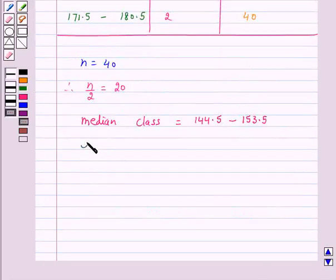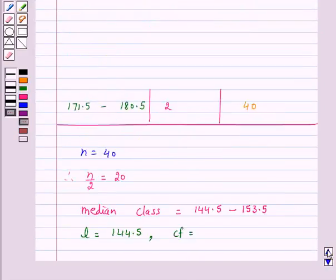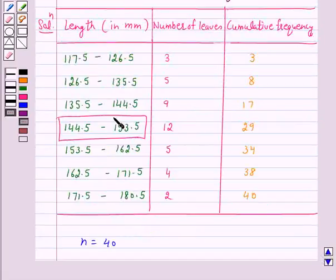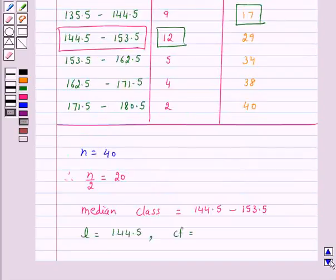We have L is equal to, which is the lower limit of the median class, 144.5. N by 2 is 20. CF, which is the cumulative frequency of the class preceding the median class, is 17. F is the frequency of the median class, which is 12. And H is equal to 9.